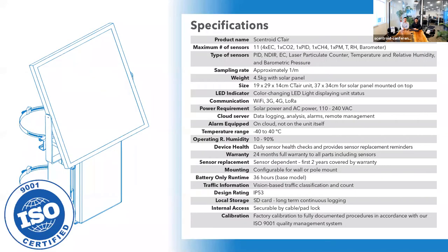Let's briefly go over all the specifications. The unit samples air from the top of the unit, pulled through the sensors and exhausted at the bottom. The maximum number of sensors is 11: four electrochemical sensors (chosen from our sensor list), one CO2 sensor, a PID sensor, a methane sensor, a particulate sensor, as well as temperature, humidity, and atmospheric pressure sensors.